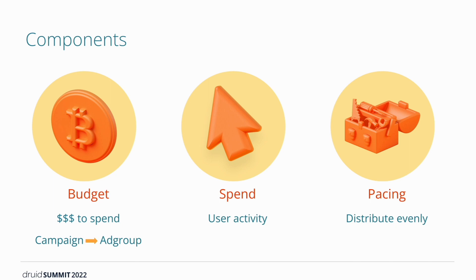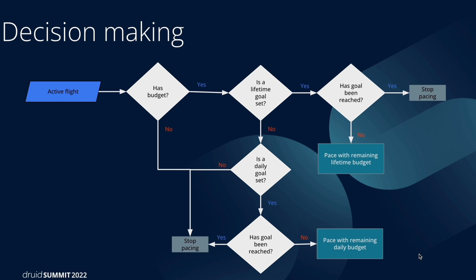We also don't want to use up the budget the very first day or first hour. Beyond distributing spend evenly, pacing also does decision making. Given an active flight — also known as an ad group — the first question is whether it has a valid budget. If so, what kind of goal is set: lifetime or daily? If the goal hasn't been reached, meaning there's remaining spend, we go ahead and pace with the remaining budget. The same logic applies for daily budget as well.